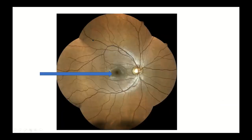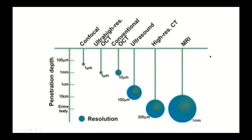This is the fundus of a human retina. The macula is here, and right in the center is the fovea. OCT scan primarily captures an image of this region, and it gives us a histological — almost histopathological — image of the macula.